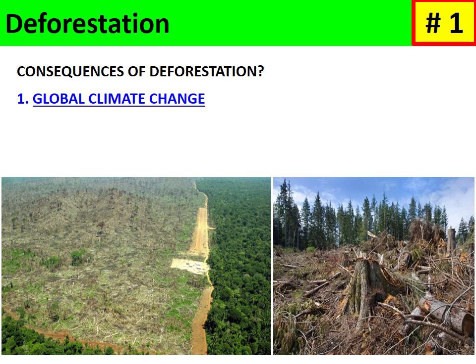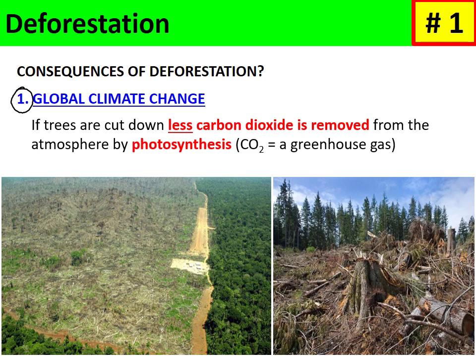The first main consequence of deforestation is global climate change. If large numbers of trees are felled, less carbon dioxide is removed from the atmosphere, because plants normally photosynthesize — they take in CO2 through gas exchange and fix it, reducing its atmospheric concentration. So with fewer trees, less photosynthesis occurs and there is a higher concentration of CO2 in the atmosphere.